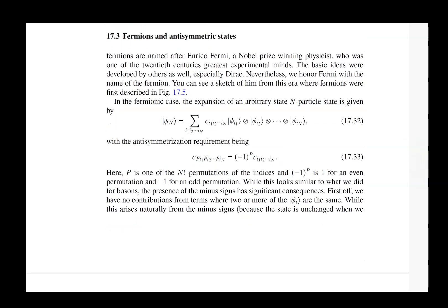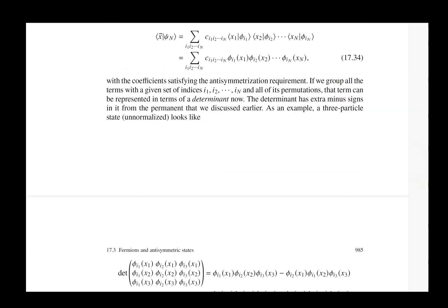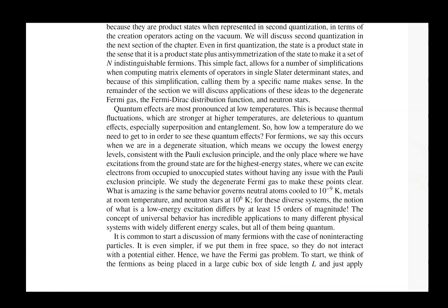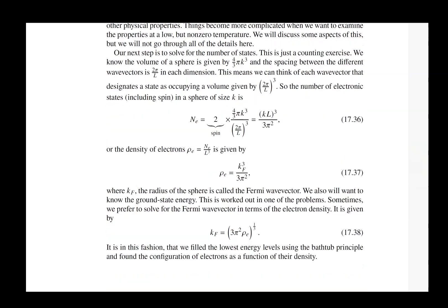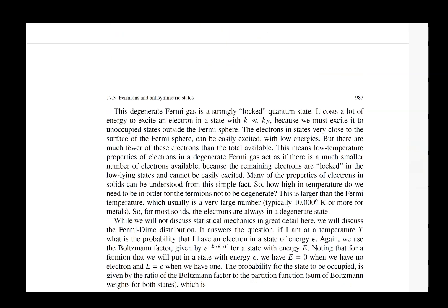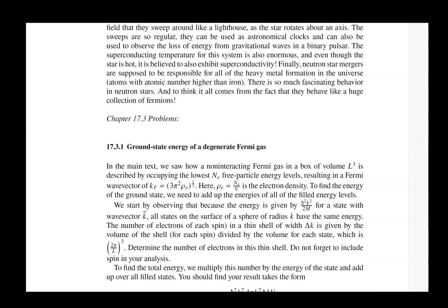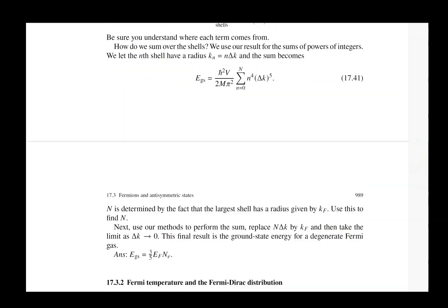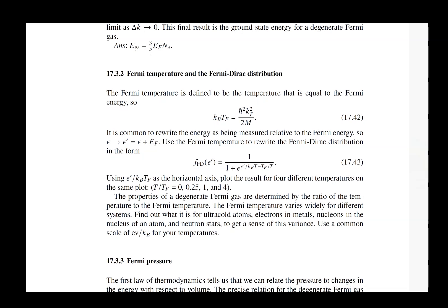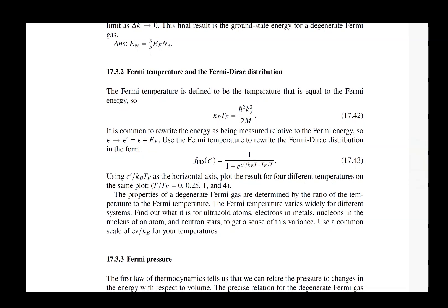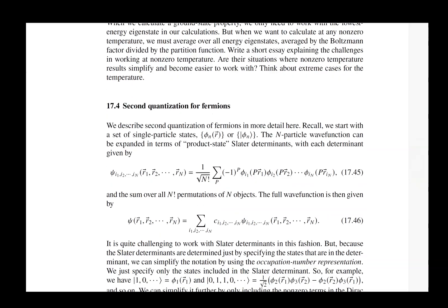Then we move on to fermions, named after Enrico Fermi. These are the particles that don't like each other — they obey the Pauli exclusion principle and have antisymmetric states. The classic way of describing them in first quantization is using something called a Slater determinant. Once you have a reasonable number of electrons you recognize that working with Slater determinants is incredibly difficult, which is why second quantization is so useful. Before discussing that, we cover important concepts such as Fermi temperatures, degenerate Fermi gases, and Fermi pressure — all consequences of the Pauli exclusion principle.